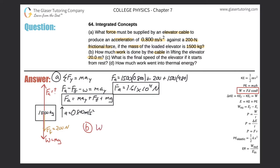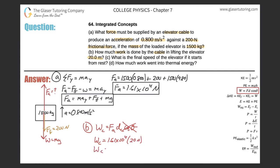The work done by the cable equals the applied force multiplied by the distance the elevator moves — 20 meters — multiplied by the cosine of the angle between the force vector and the displacement vector. The applied force points up and the motion is also upward, so the angle between them is zero. Cosine of zero is one, so that term cancels. The work equals 1.61 × 10⁴ times 20 meters, giving 3.22 × 10⁵ joules.